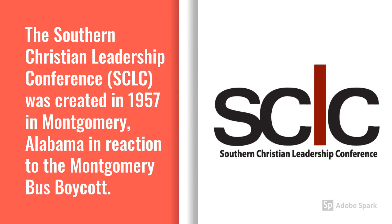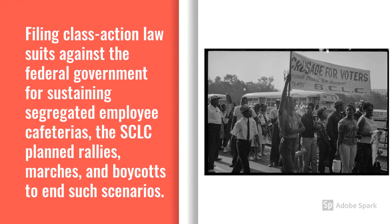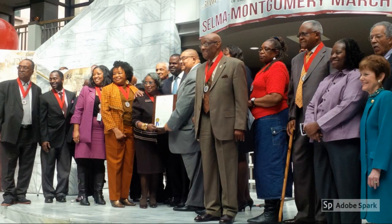The Southern Christian Leadership Conference, SCLC, was created in 1957 in Montgomery, Alabama, in reaction to the Montgomery Bus Boycott. It was led by Dr. Martin Luther King Jr., who was living in Montgomery at the time. The headquarters for the SCLC was moved to Atlanta. Filing class-action lawsuits against the federal government for sustaining segregated employee cafeterias, the SCLC planned rallies, marches, and boycotts to end such scenarios. The SCLC organized protests — the Albany Movement, for instance — and opportunities for the economic improvement of Blacks throughout the South. The SCLC continues to strive to change and impact lives today, focusing on causes such as health care, prison reform, care and treatment of refugees, and job site safety.